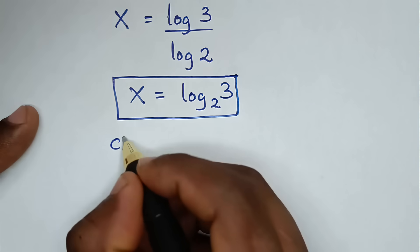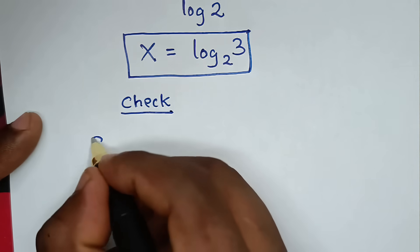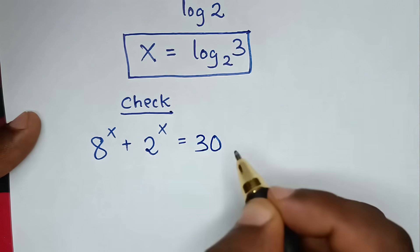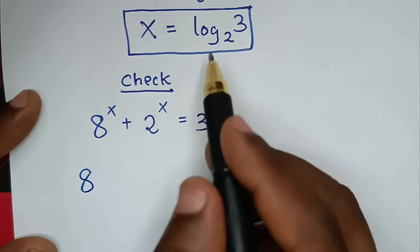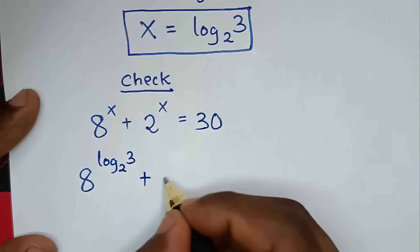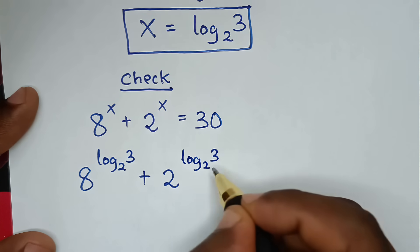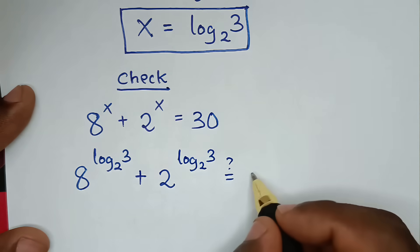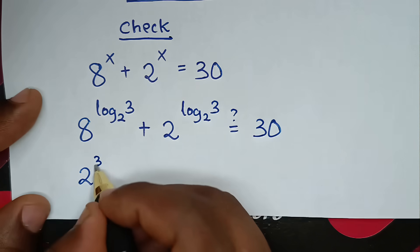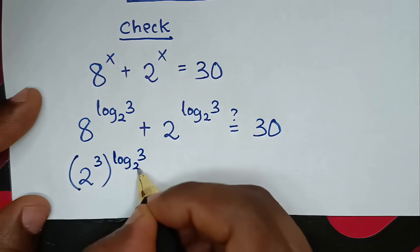Now let's verify the answer. We substitute x = log₂(3) into the original equation 8^x + 2^x = 30. So it becomes 8^(log₂3) + 2^(log₂3). Since 8 = 2³, this becomes (2³)^(log₂3) + 2^(log₂3) = 2^(3·log₂3) + 2^(log₂3).